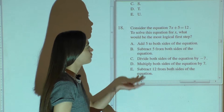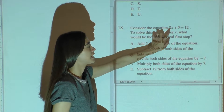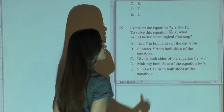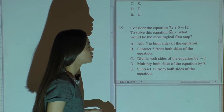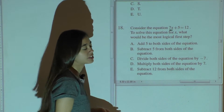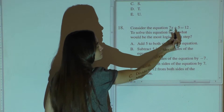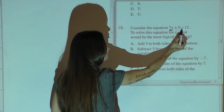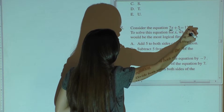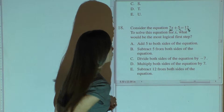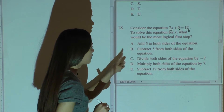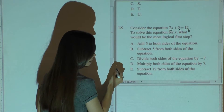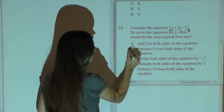Whenever solving for x, you are trying to isolate your x as much as possible. So the very first step — the most logical first step — would be to subtract 5 from both sides, which is why your answer would be B: subtract 5 from both sides of the equation.